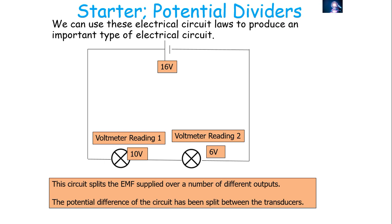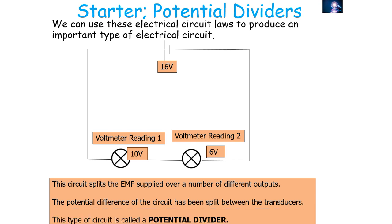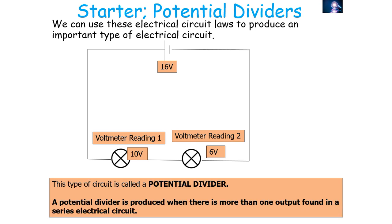We can use that particular law to produce an important type of electrical circuit. If you have two or more outputs in series with each other on the same electrical loop, the potential difference will split from the source between those outputs. We call these outputs transducers, and this type of circuit is a potential divider. It's called a potential divider because you are literally dividing the potential — the energy — provided from the source between more than one output, found in a series electrical circuit or a single path.